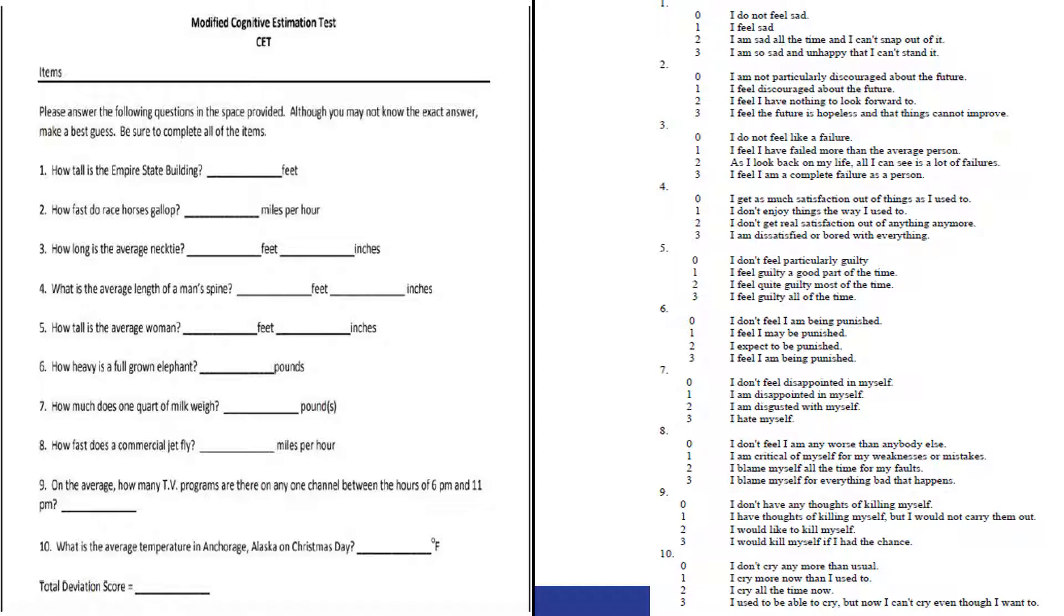The Beck Depression Inventory, this is just the first 10 questions as a sample, basically had the participants write down how true to that particular statement they most identified with. So I do not feel sad, I feel sad, I'm sad all the time, I'm so sad and unhappy I can't stand it. These were just a sample of the questions.